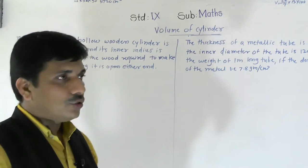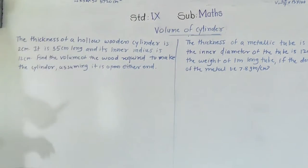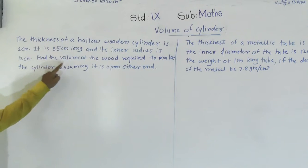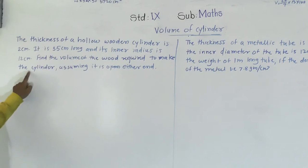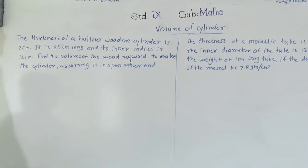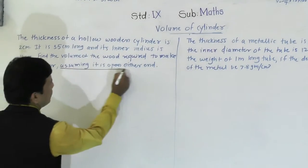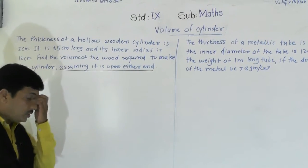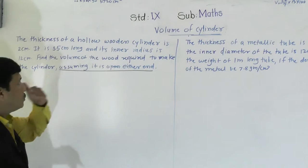Volume of Cylinder. The first problem: the thickness of a hollow wooden cylinder is 2 cm. It is 35 cm long and its inner radius is 12 cm. Find the volume of the wood required to make the cylinder. We have to find out volume, assuming it is open at one end. If it is open from both sides, we cannot find out volume, so we assume it is open at one end.